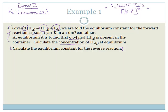In this case we are told the constant is 0.02, and at equilibrium we have 0.04 moles of hydrogen iodide present in the container. We need to calculate the concentration of hydrogen, so we're going to have to use a table.